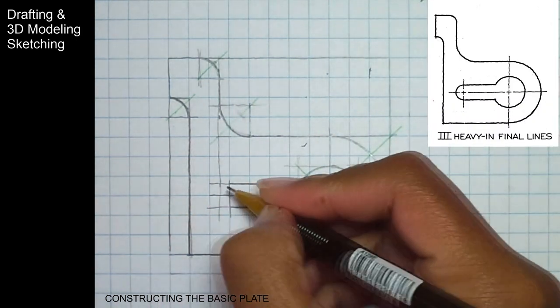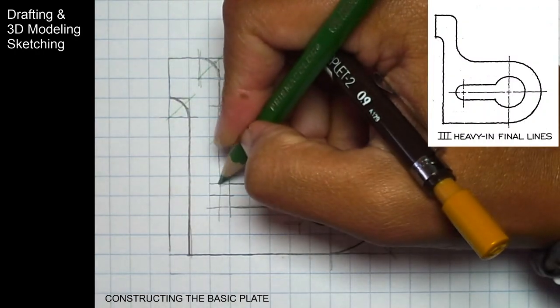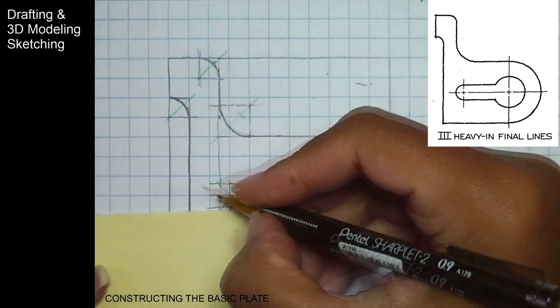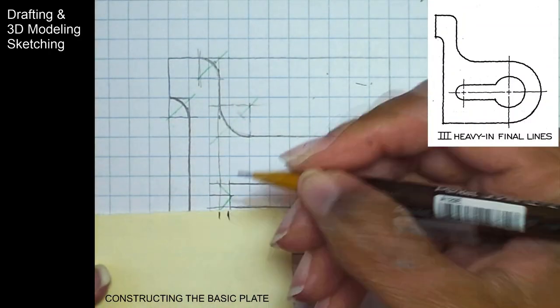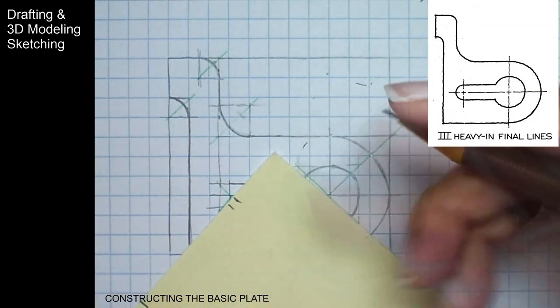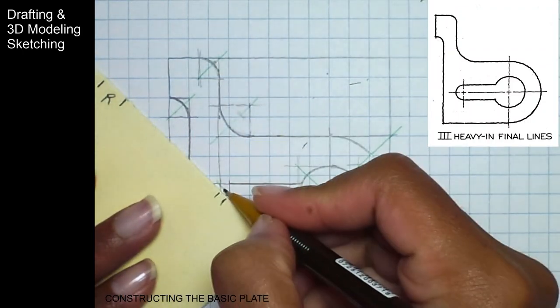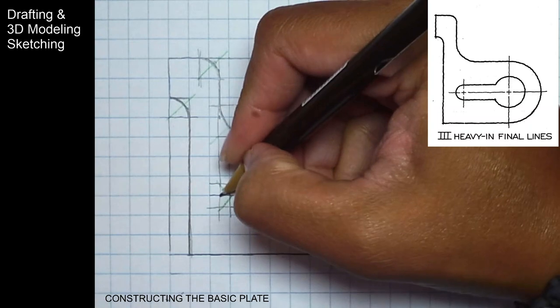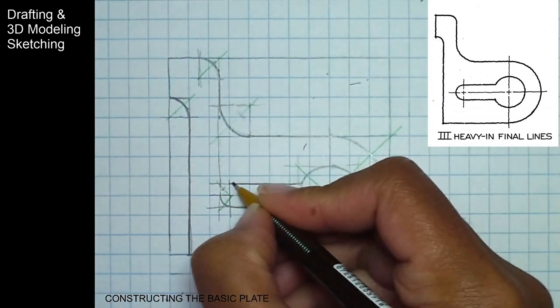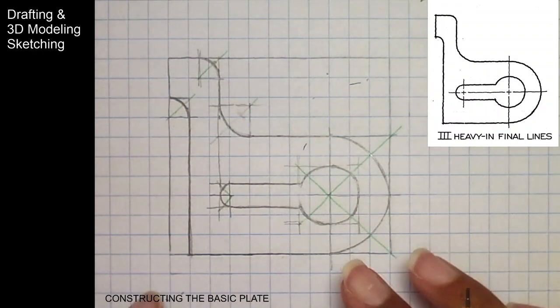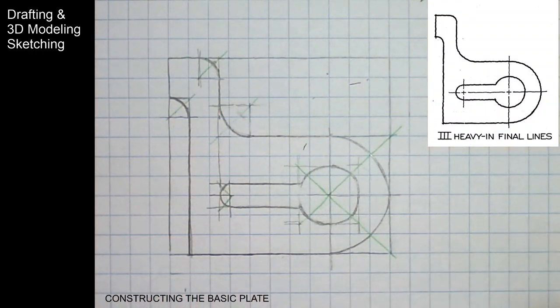And then we'll do the same thing here again for our diagonal. Our diagonal to get the radius. We mark it off. Then we go diagonal, diagonal. So we have our construction of all basic plates.